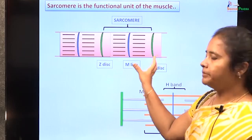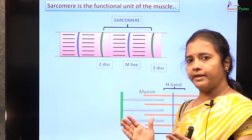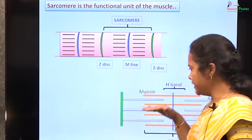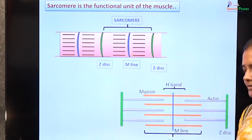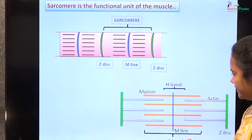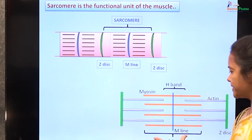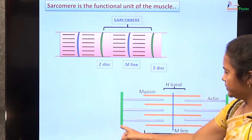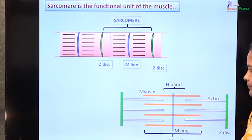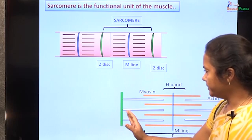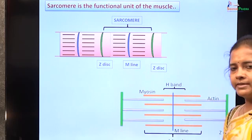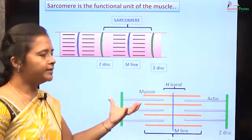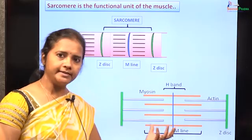The sarcomere is the basic structural and functional unit of a skeletal muscle fiber. It is the space between two Z discs, within which we have actin and myosin filaments overlapping each other. The space where only the myosin thick filaments are present is called the A band, and the actin filaments are attached to the Z disc on the sides. The actin filaments slide over the myosin filaments — only the actin filaments move over the cross bridges of the myosin heads, while the myosin filaments remain stationary.